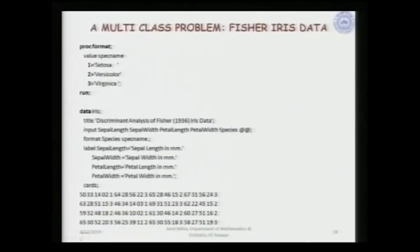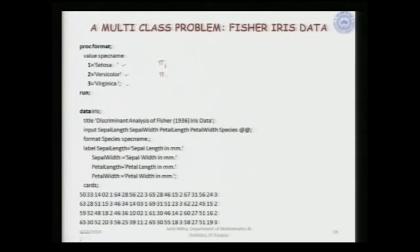We first have this data, which is a very standard dataset called the Fisher iris data. It corresponds to three species: Setosa, Versicolor and Virginica. These are the three classes — three populations pi 1, pi 2 and pi 3 — corresponding to the three different species of this particular dataset.